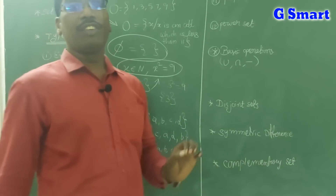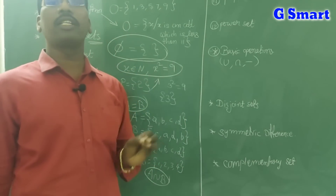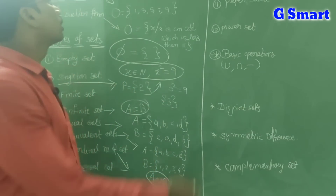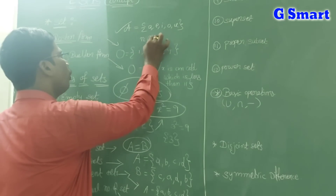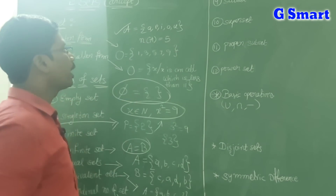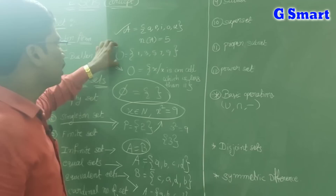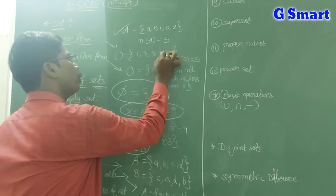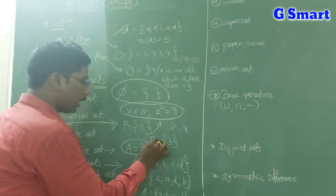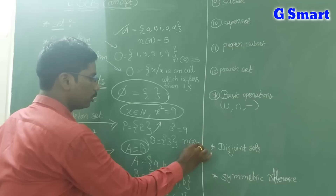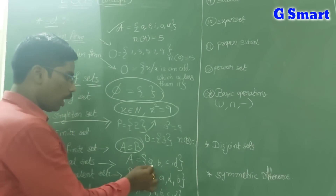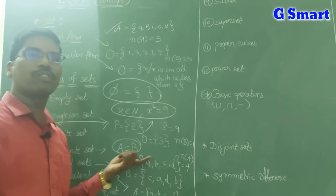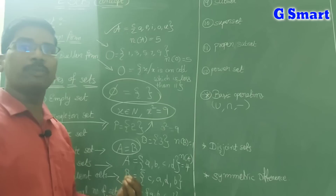Cardinal number of a set: the number of elements present in a set is called the cardinal number of that set. For example, the cardinal number n(A) = 5 if A has 5 elements; n(O) = 5 for the set of odd numbers {1,3,5,7,9}; n(B) = 1 for a singleton set; n(A) = 4 for a set with 4 elements.